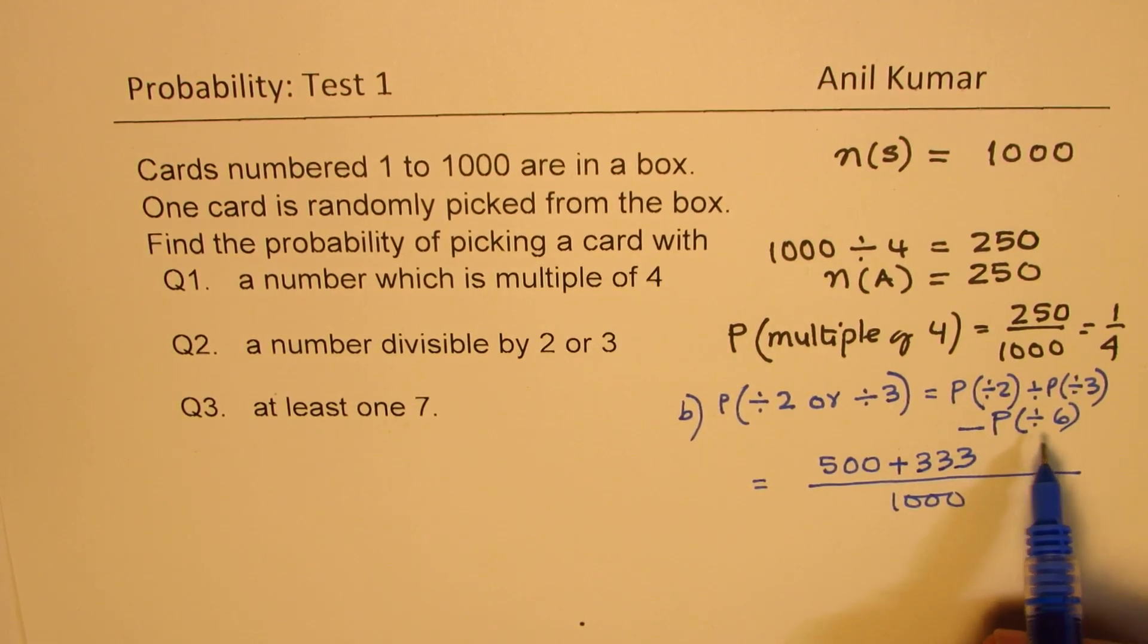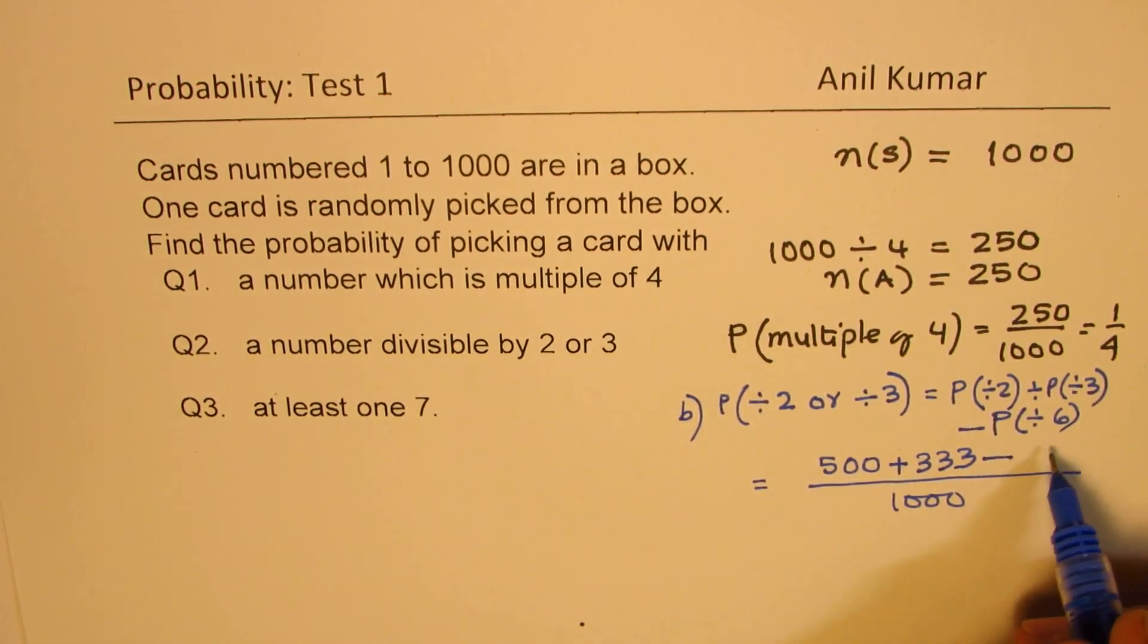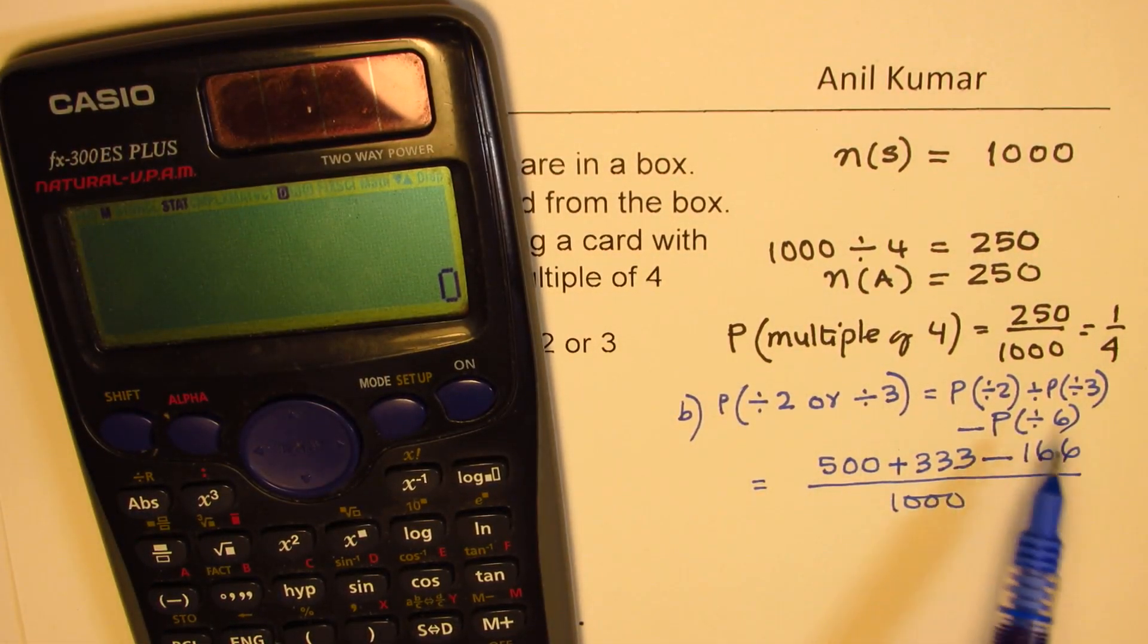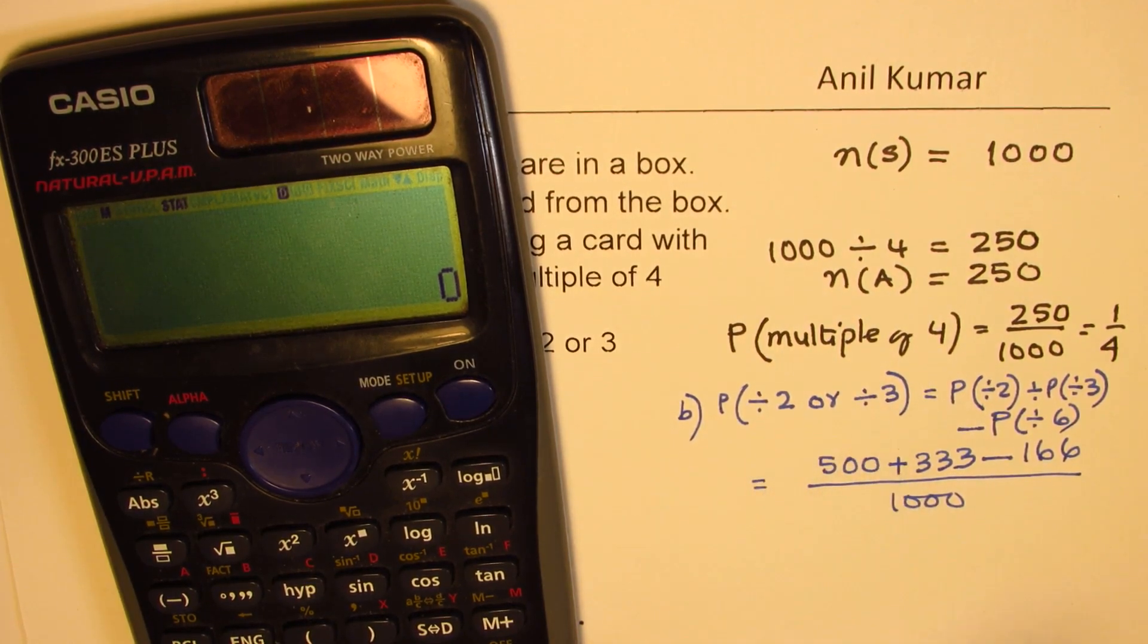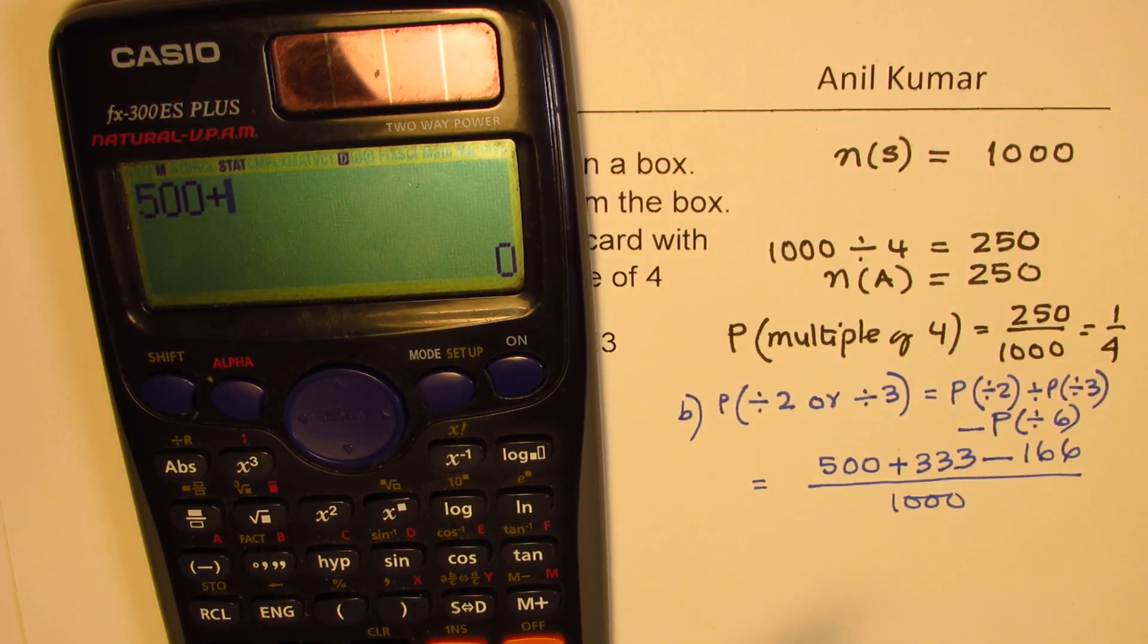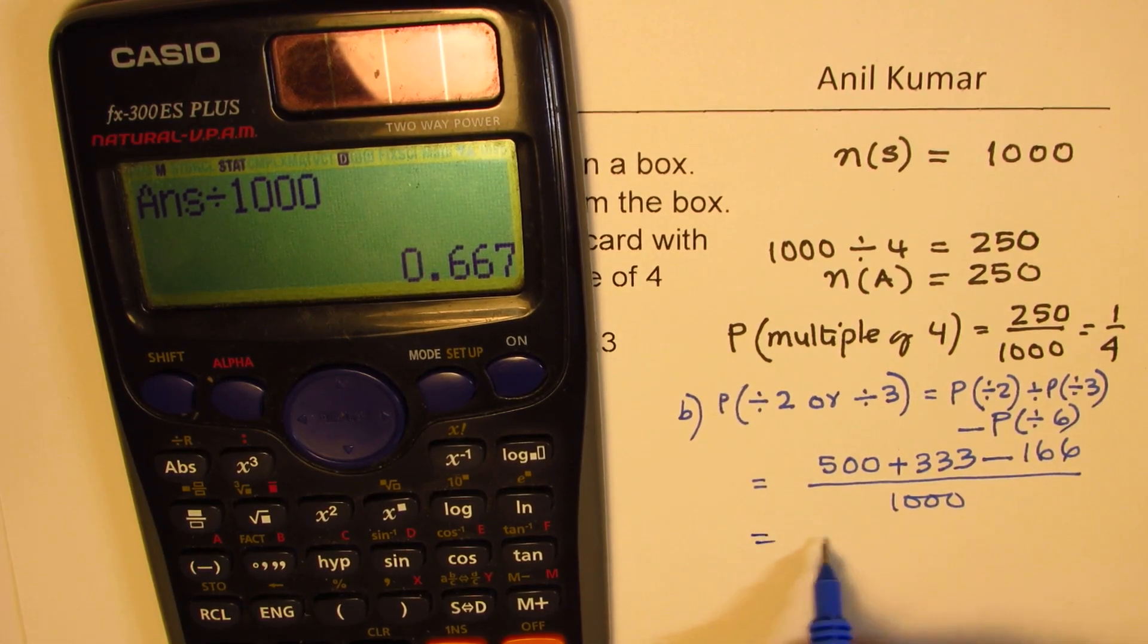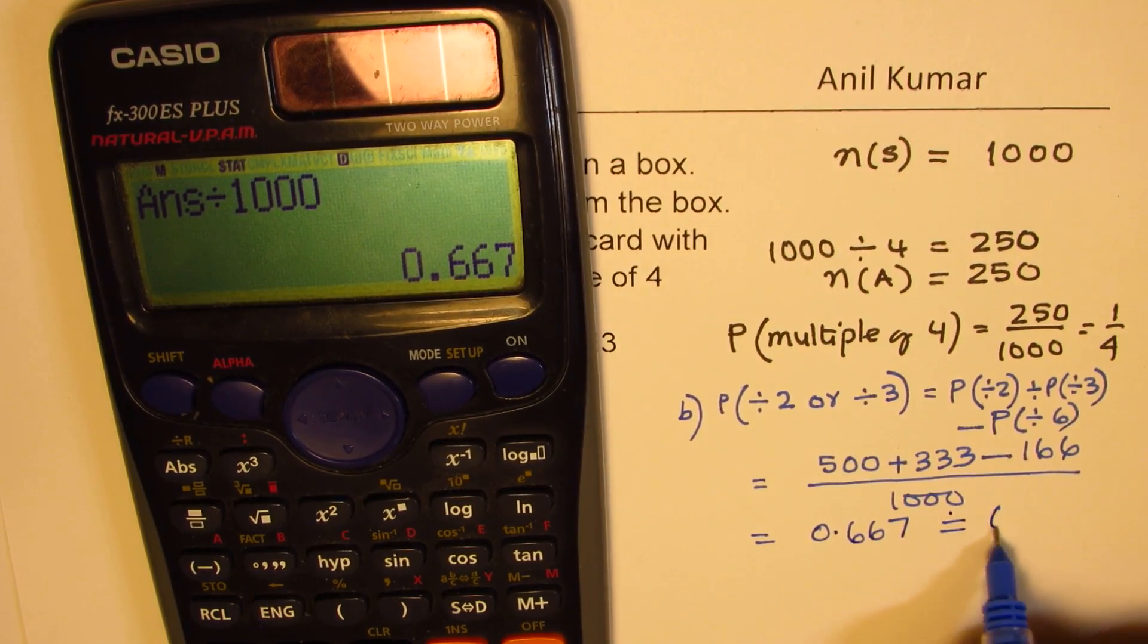Now, the numbers which are divisible by 6 will be half of these. So half of these will be—you can say 166. After all, half of this will be divisible by 6. So that becomes your favorable cards which you're looking for as multiples of 2 or 3. So we have here 500 plus 333 minus 166, and then we'll divide this by 1000 to get our answer, which is 0.667 or you can say 67%.